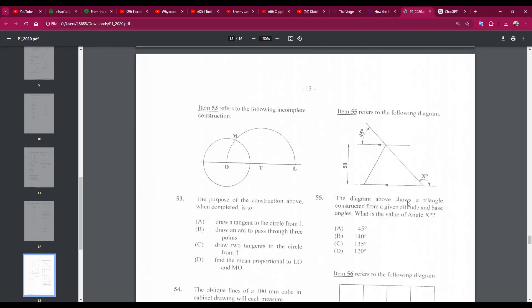The diagram above shows a triangle constructed from a given altitude and base angles. What is the value of X? Okay, so we have a triangle here. This is X. These two lines are parallel, right? If this angle is 45, then it means that this angle is also 45. And this entire angle is 180. So 180 minus 45 will mean that X is 135C.